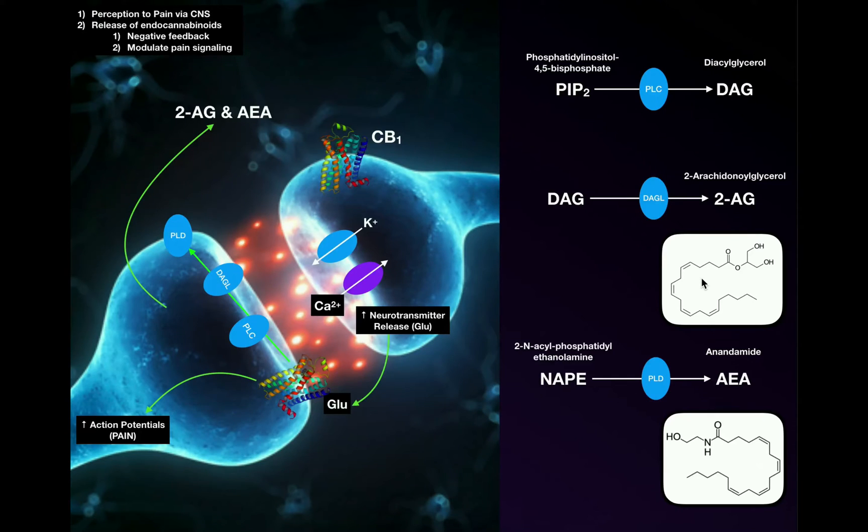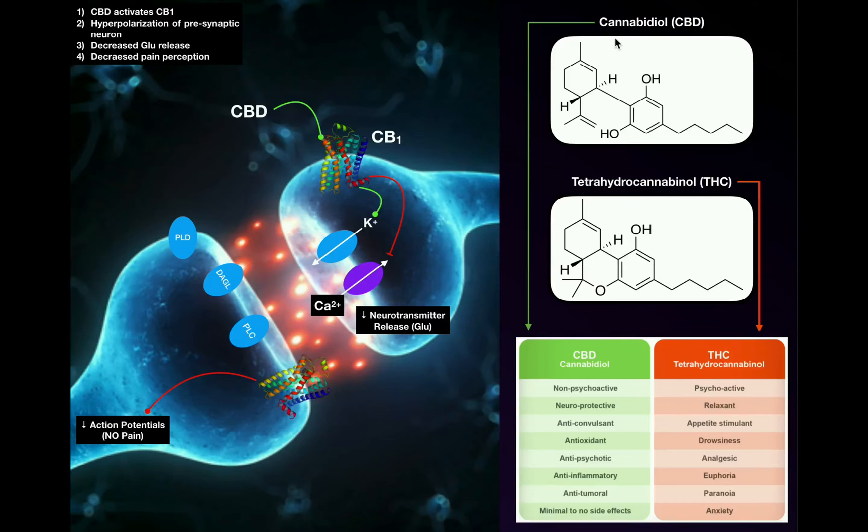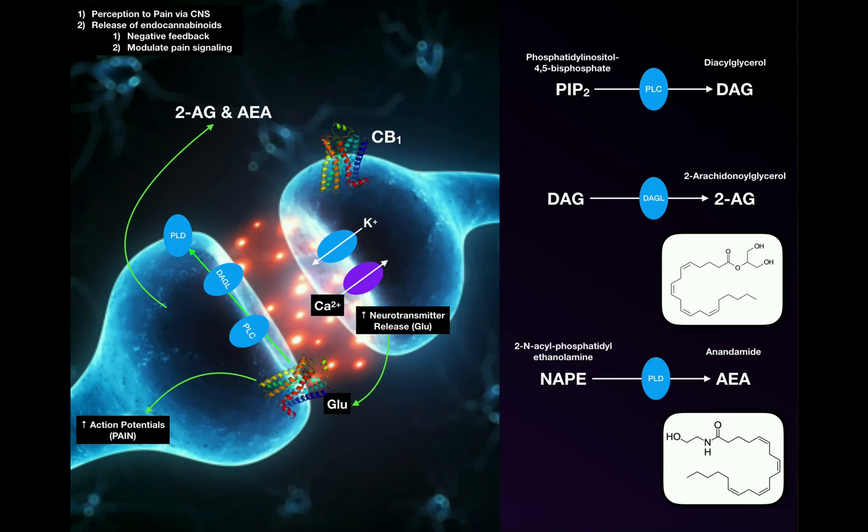There are also what we can call exocannabinoids. These are typically the cannabinoids that you would have in marijuana or some other source like CBD oil. Those are going to be cannabidiol, abbreviated CBD, and then also the infamous tetrahydrocannabinol THC, which is only legal in certain states and to varying degrees.